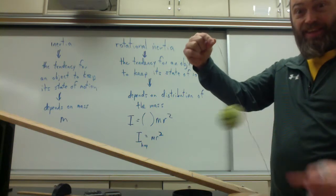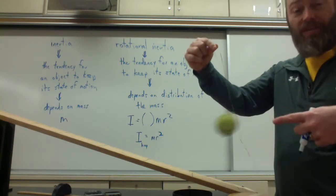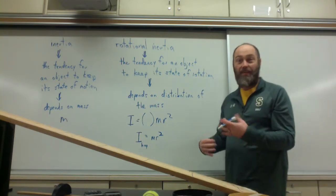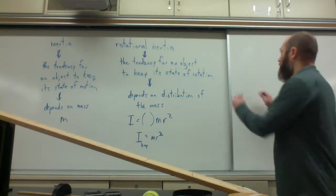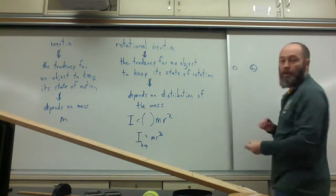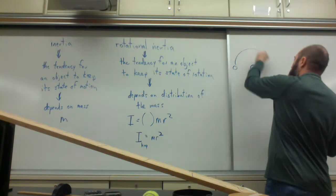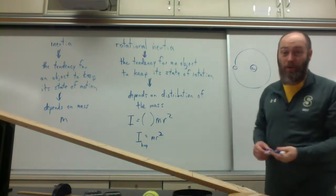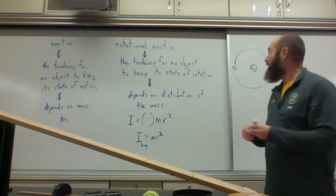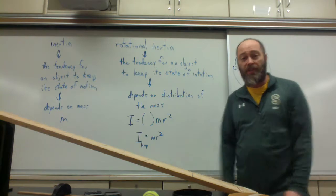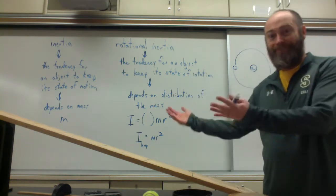If you're talking about a planet orbiting the sun, for example, if I have the sun and I have a planet orbiting around it, well again, all of the mass is the distance R away. They're essentially R away. So that would be considered a point mass, MR squared. So that's rotational inertia. Hopefully that makes sense.